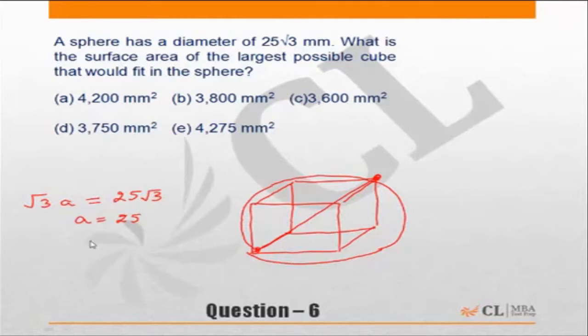Surface area of that cube will be equal to 6a². So it will be 6 × 25², that is 625, and 6 × 625 is going to be 3,750. Hence, my answer will be option D.